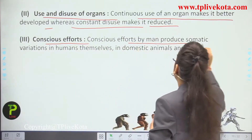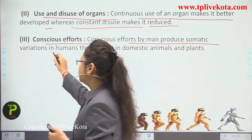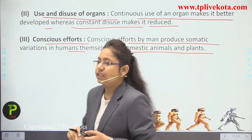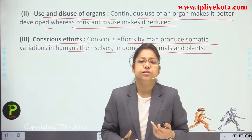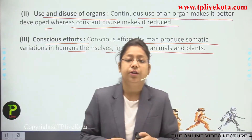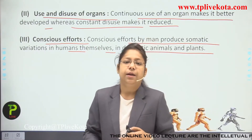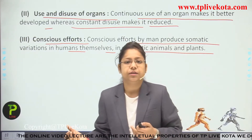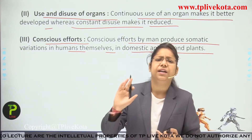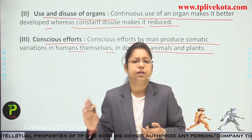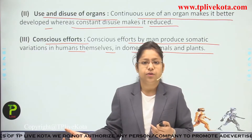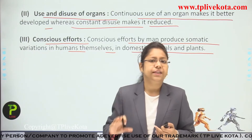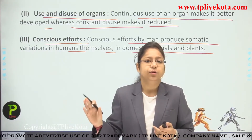Conscious efforts by a person also produce somatic variations in humans, domestic animals, and plants. For example, if someone puts a lot of effort into studies, gains good marks, and takes admission in universities — this is just somatic variation. It does not depend on the next incoming generation and the gene for this type of effort will not be given to the next generation.